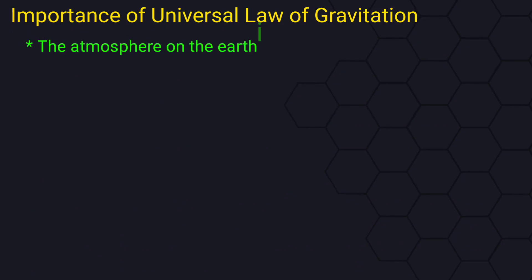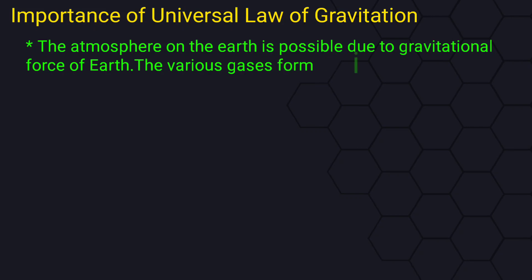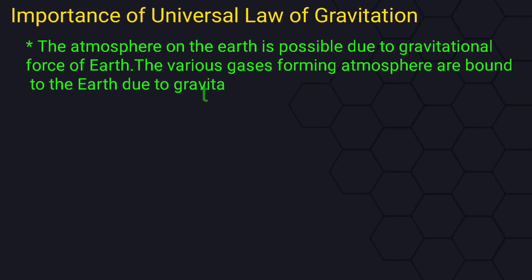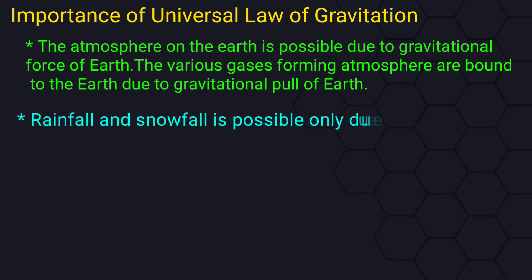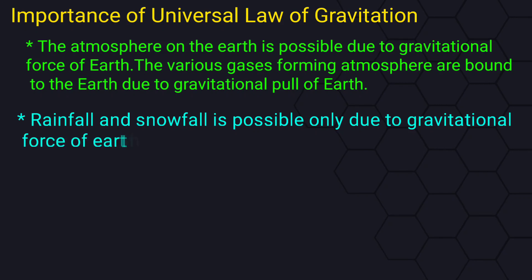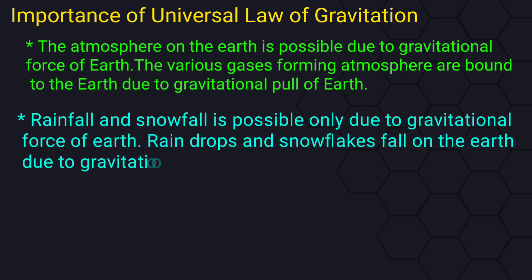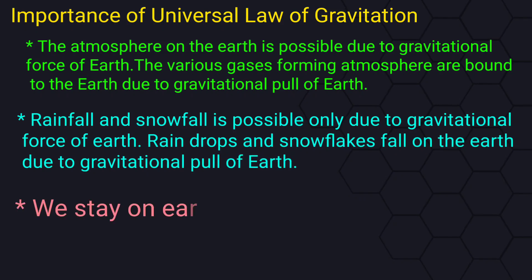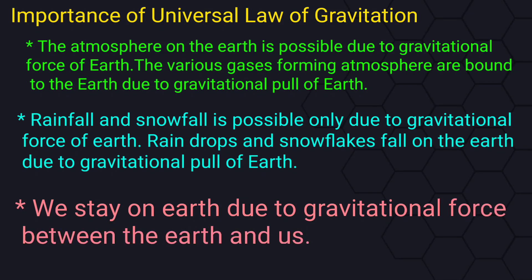The atmosphere on the Earth is possible due to the gravitational force of the Earth. The various gases forming the atmosphere are bound to the Earth due to the gravitational pull. Rainfall and snowfall are possible only due to the gravitational force of the Earth — raindrops and snowflakes fall on the Earth due to gravitational pull. We also stay on the Earth due to the gravitational force between us and the Earth.